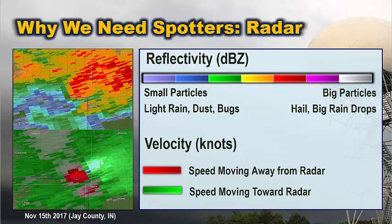On the velocity, what we see is the speed of those particles moving away from the radar or towards it. In this case, towards the radar is shown in green, and red is away from the radar. So that indicates there's some kind of rotation going on, and that's typically what we're going to see with a tornado or a strongly rotating storm.